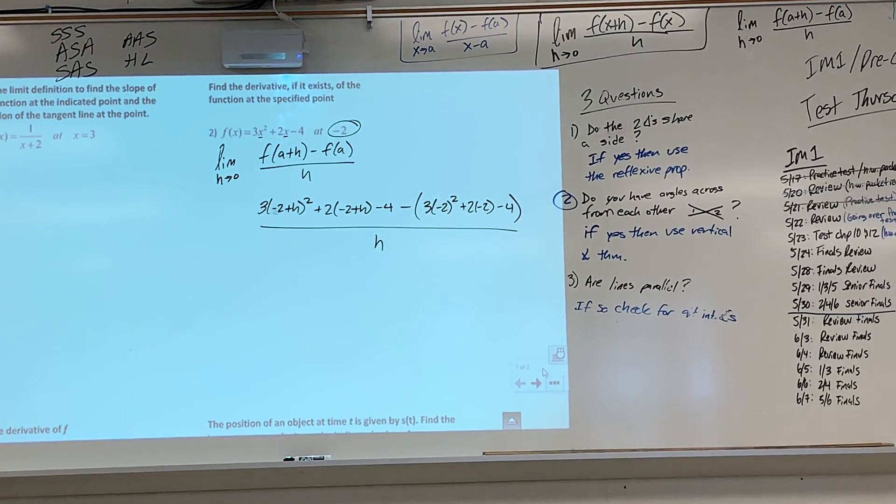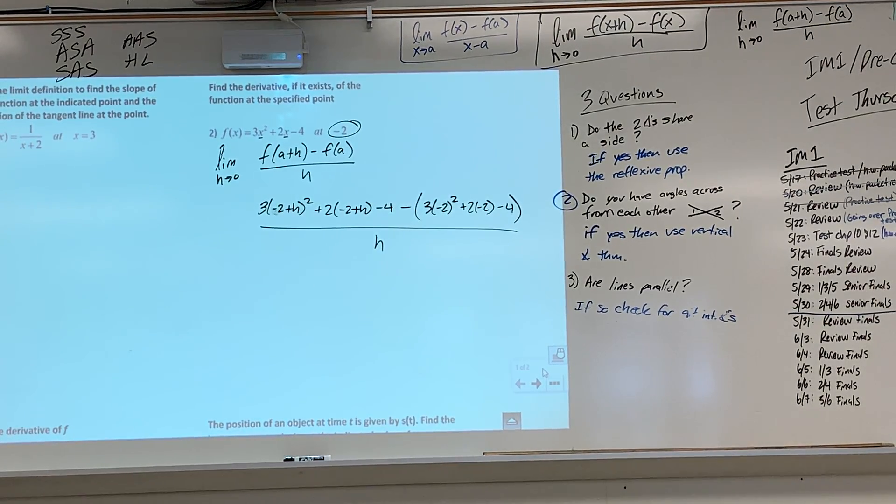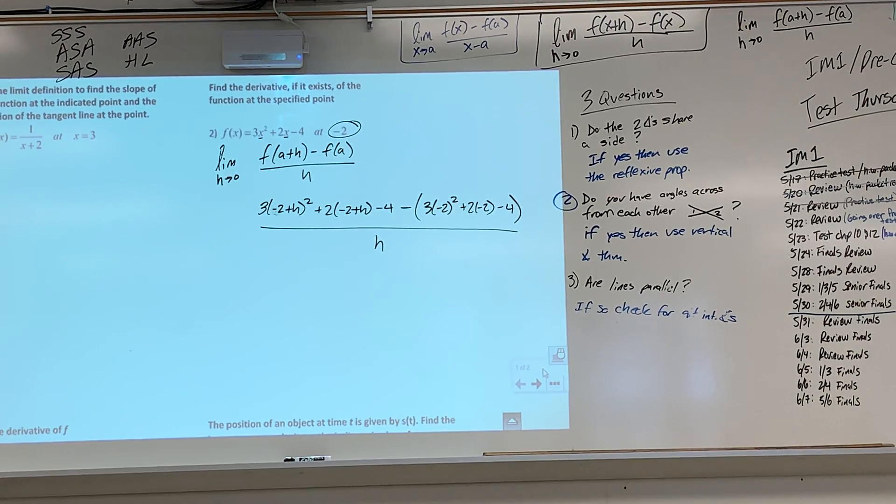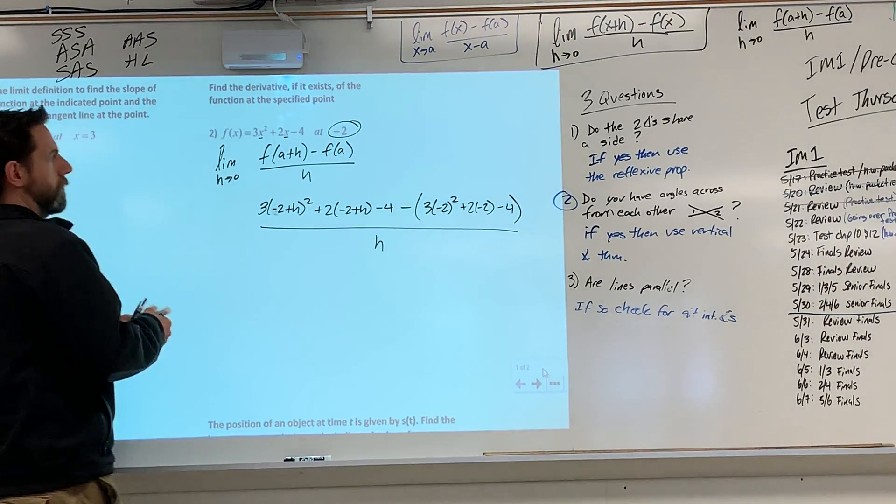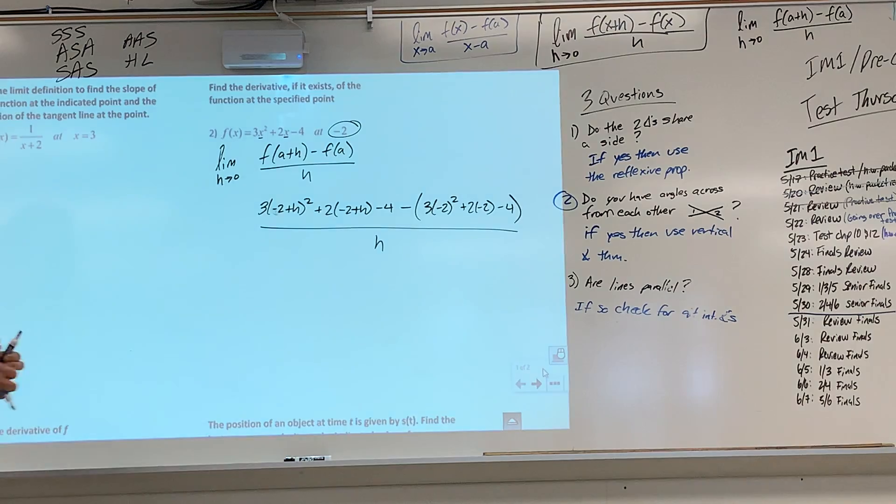And we're doing the limit as h approaches zero. So we have to be able to cancel out that h, or we didn't do it. So like, right here?